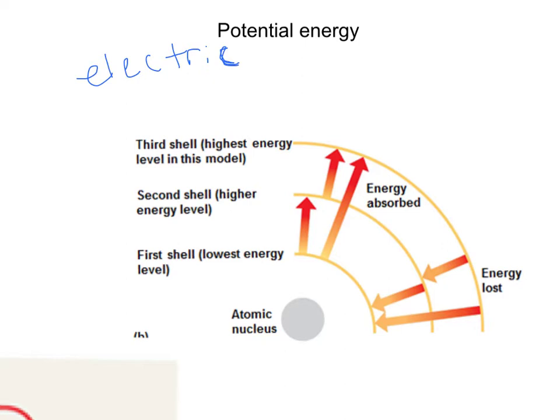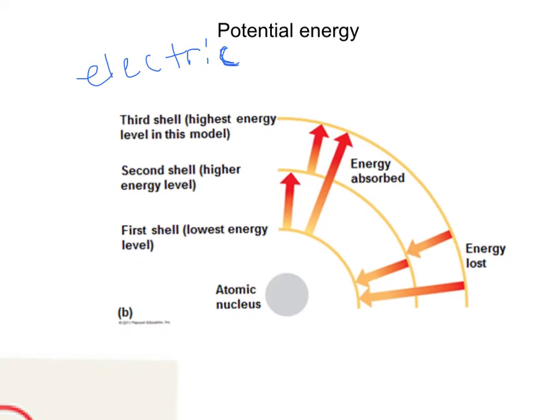We make concentration gradients of hydrogen ions that power the production of glucose and ATP. In our atom, we have different energy levels — different shells — that electrons are in when orbiting the nucleus. I've got a first shell, a second one, and a third one here.